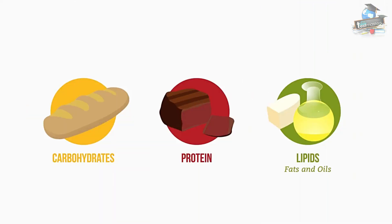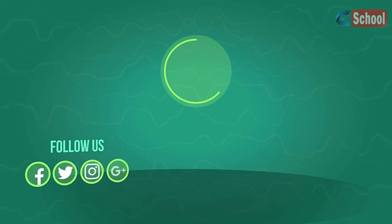So there you have it. The three key biological molecules that are essential to living processes: carbohydrates, proteins, and lipids.